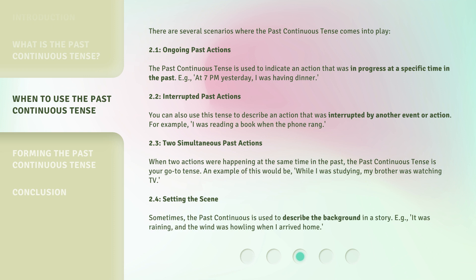2.3: Two Simultaneous Past Actions. When two actions were happening at the same time in the past, the Past Continuous Tense is your go-to tense. An example of this would be: while I was studying, my brother was watching TV.